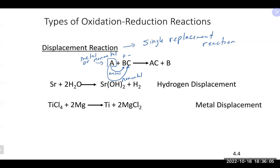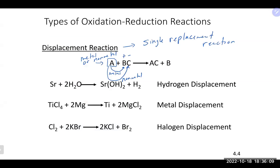A more specific single replacement is a hydrogen displacement. For example, strontium (oxidation state zero) reacts with water (oxygen −2, hydrogen +1) and kicks out the hydrogen. The hydrogen comes out as hydrogen gas with zero oxidation state. Strontium gains a +2 charge. Strontium went from 0 to +2 — going through oxidation. Hydrogen went from +1 to 0 — going through reduction. This is a single replacement and specifically a hydrogen displacement reaction, and also a redox reaction.